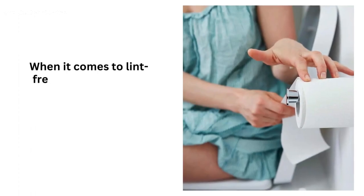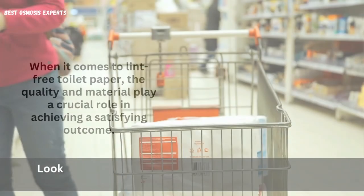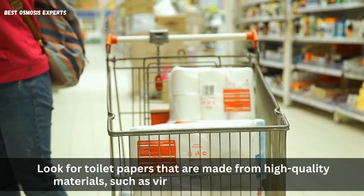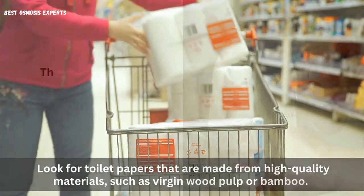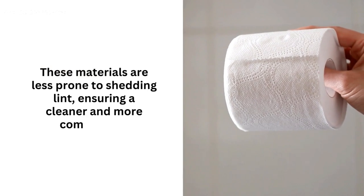The role of quality and material: when it comes to lint-free toilet paper, the quality and material play a crucial role in achieving a satisfying outcome. Look for toilet papers that are made from high-quality materials, such as virgin wood pulp or bamboo. These materials are less prone to shedding lint, ensuring a cleaner and more comfortable experience.